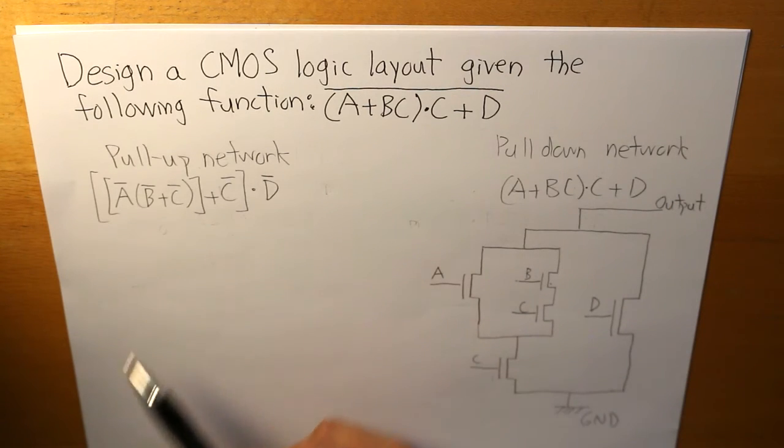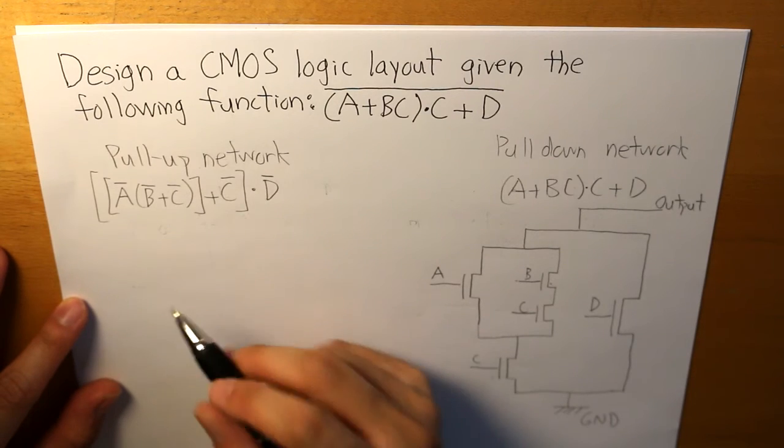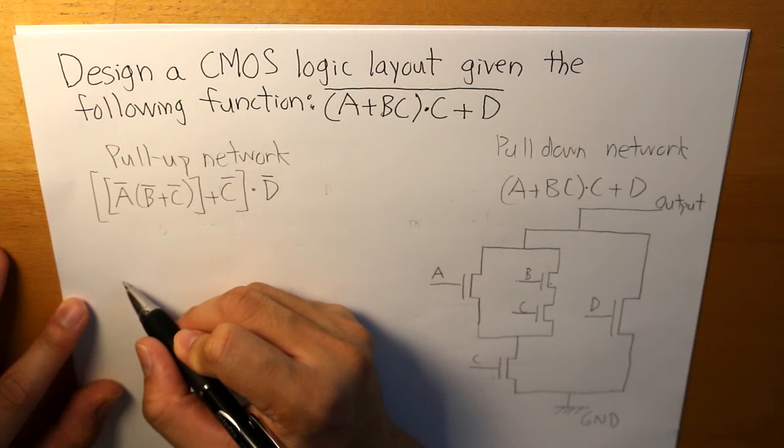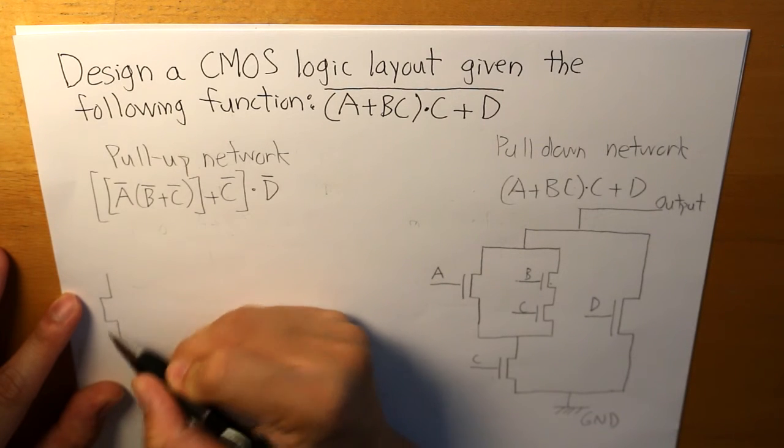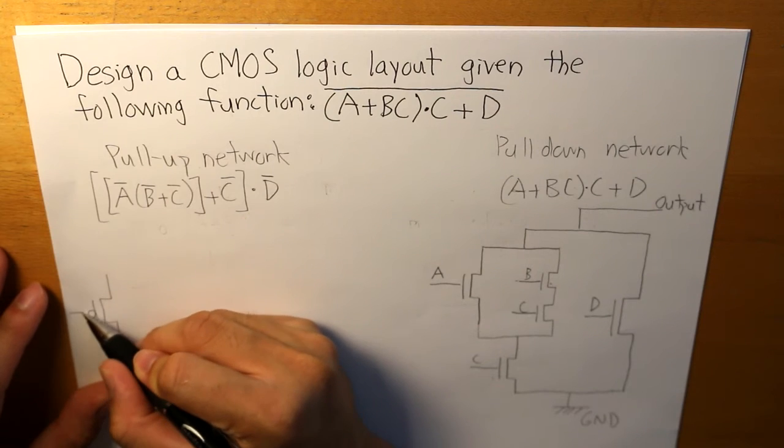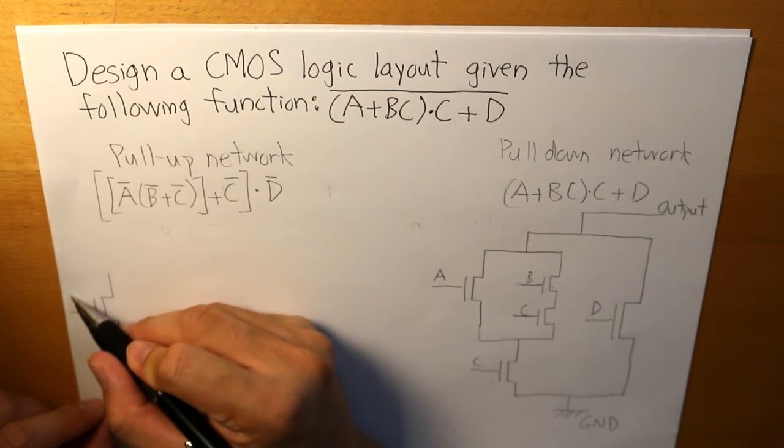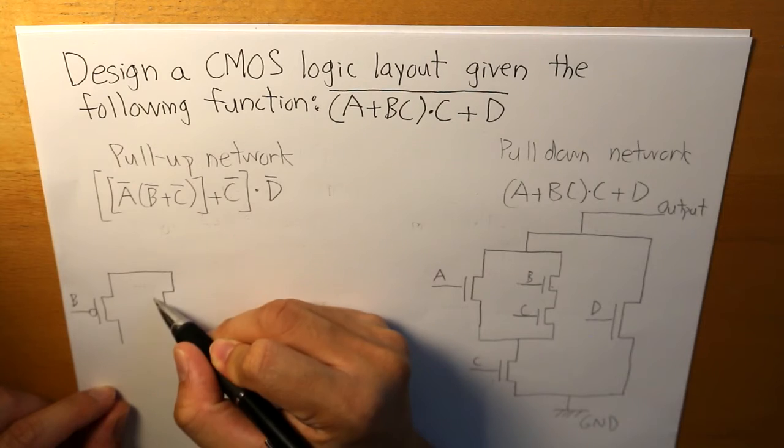So let's draw it, shall we? So let's start off with B and C. So B and C are in parallel with one another. So what we have is, and remember that we have to draw a circle that basically represents the whole. So B is in parallel with C.